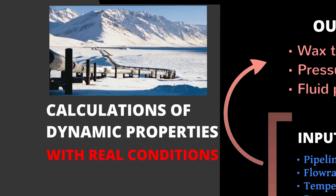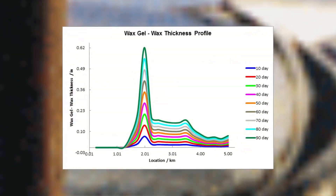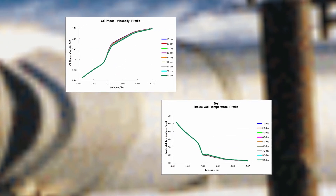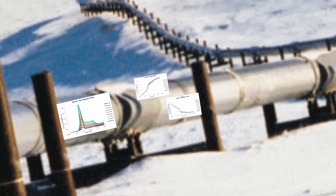On this chart, we can see the evolution of the wax thickness along the pipeline and according to the production time. From these results, calculation of pigging frequency can be done. Also, for example, you can study the impact of the insulation on the wax thickness. Here, the viscosity and the temperature wall pipe are plotted. Many other parameters can be calculated, such as pressure loss and density.